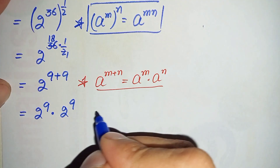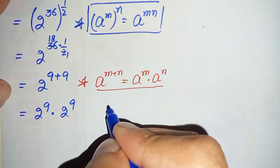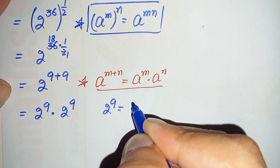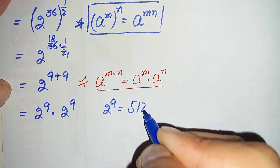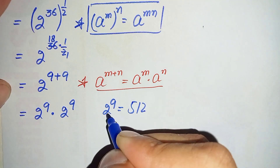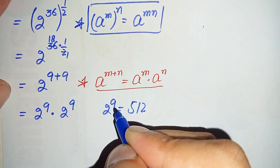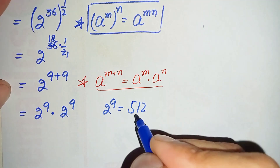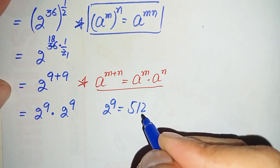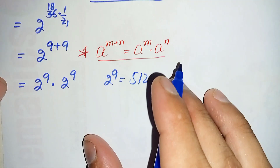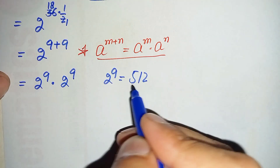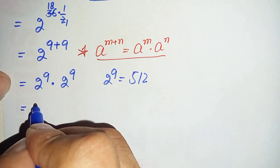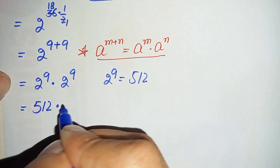Now we will find the value of 2 raised to power 9. The value of 2 raised to power 10 is the famous number 1024, so if we divide 1024 by 2 it gives 512. Therefore 2 raised to power 9 is 512. We replace the two instances of 2 raised to power 9 with 512, giving us 512 times 512.